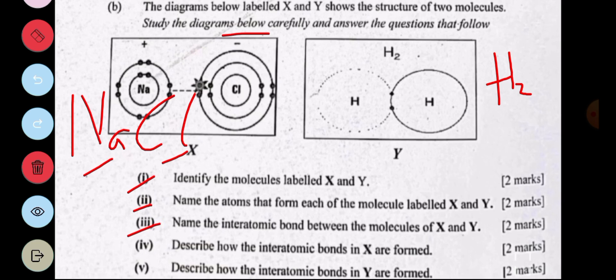Part III, name the interatomic bond between X and Y. The interatomic bond in X is ionic bond or electrovalent bond. And the interatomic bond in hydrogen gas is covalent bond.